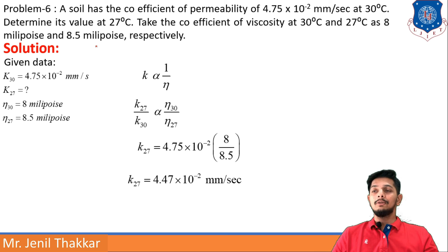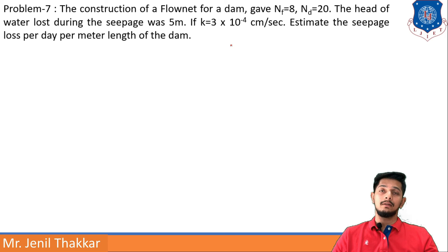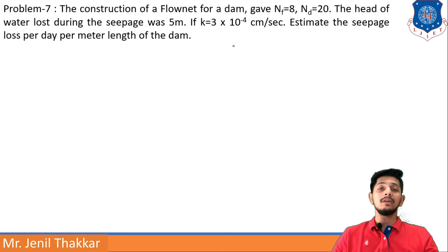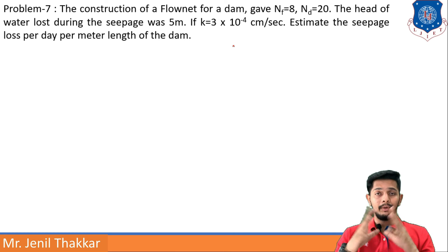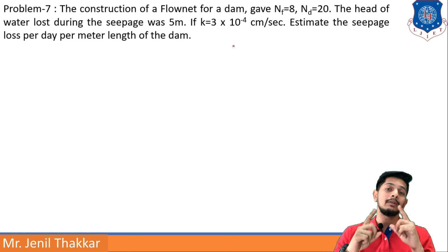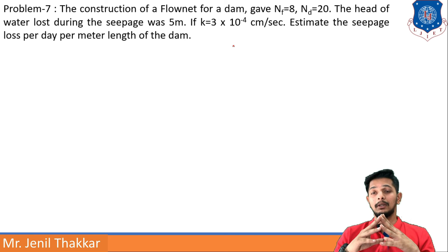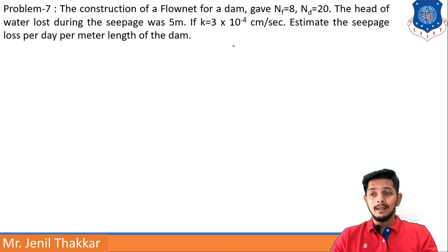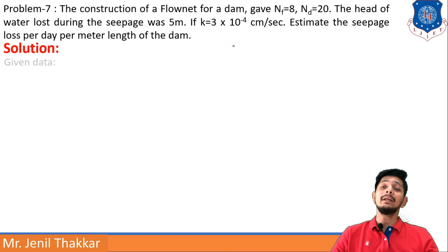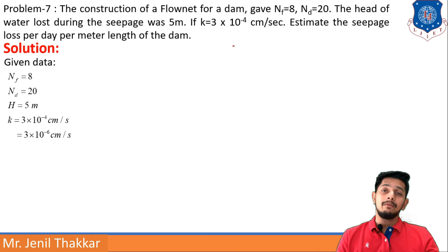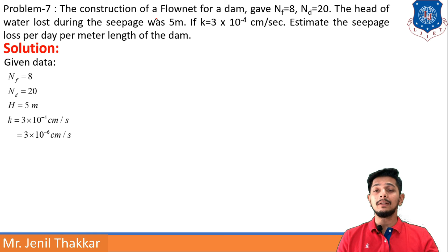Problem 7: Construction of a flow net for a dam gave Nf = 8 and Nd = 20. The head of water lost during seepage was 5 m. Given k = 3×10⁻⁴ cm/s, estimate the seepage loss per day per meter length of the dam. Written given data: Nf = 8, Nd = 20, k = 3×10⁻⁴ cm/s, H = 5 m.